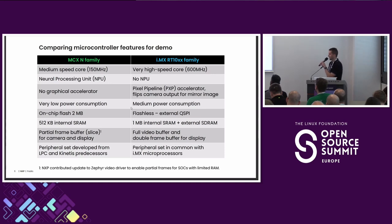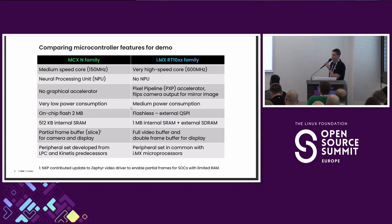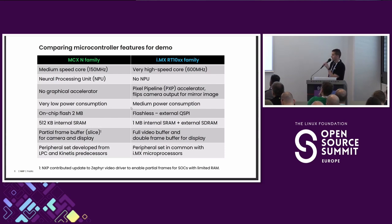This is the most important slide for platform comparison. You can see the difference in core clocks: 600 MHz versus 150 MHz. The main difference in this demo is the neural processing unit, which only MCXN has and RT1060 does not. So RT1060 calculates the model only in software, while MCXN uses the NPU.